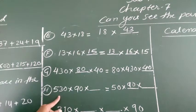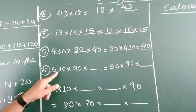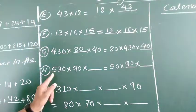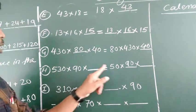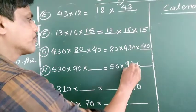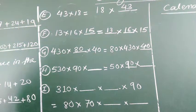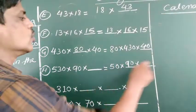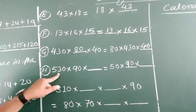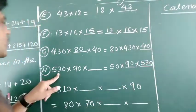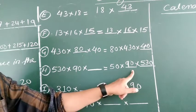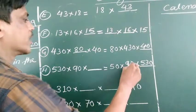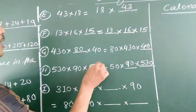Next: 530 into 90 into blank equals 50 into 90 into blank. So 530 is here but not on the right side — write 530 there. 90 is already given on both sides. 50 is on the right side but not on the left — so put 50 in the left blank. So: 530 into 90 into 50 equals 50 into 90 into 530.